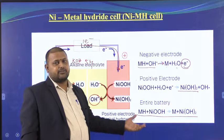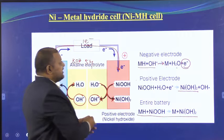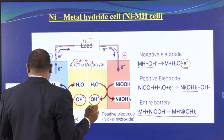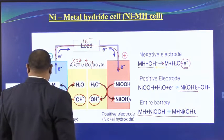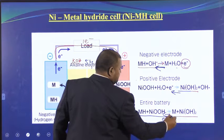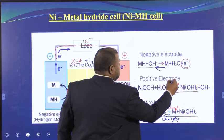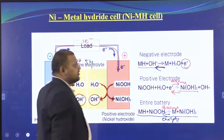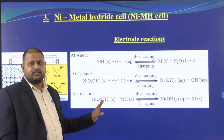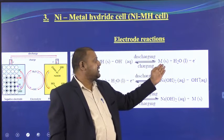If you know one battery clearly, the second one is easy. These are the discharge reactions. During charging, the reactions reverse themselves. So: forward reaction = discharging, backward reaction = charging. You can write one equation with a double arrow indicating charge and discharge directions.